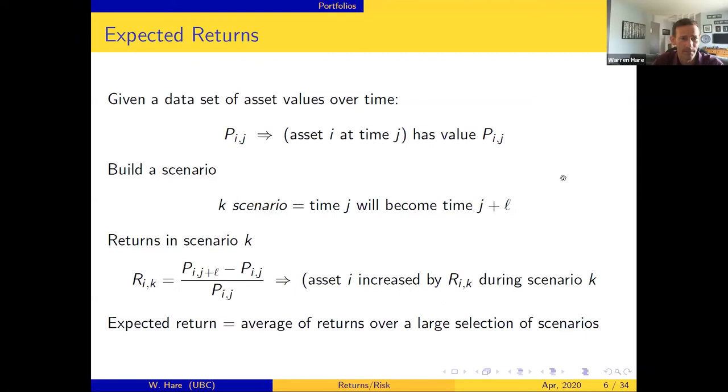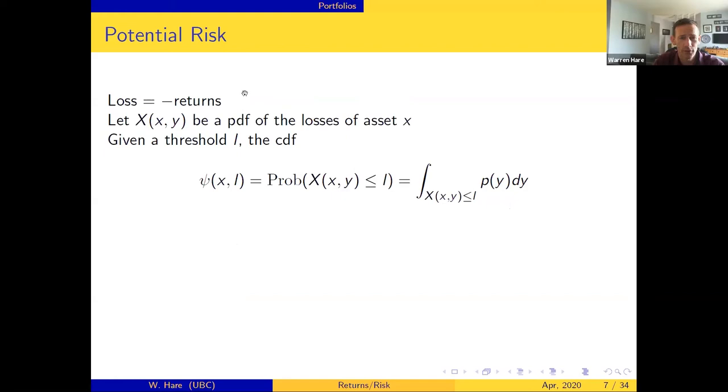So expected returns, that's pretty much it, that's pretty standardized. There's not a lot of differences in how you do it. Risk on the other hand gets way more complicated. Before we start risk I'm going to flip everything backwards - instead of talking about returns I'm going to talk about loss. So loss is just the negative of returns. What we have so far is a collection of scenarios and in each scenario we have the return from that scenario which can give us the loss for that scenario. For risk we're going to start with a probability function - we'll build our probability distribution function, pdf of the losses we'll call that capital X, and then we can build the cumulative distribution function which is the probability that the losses are less than or equal to some threshold l.